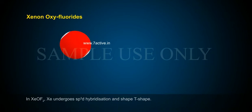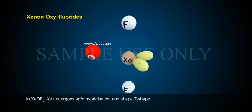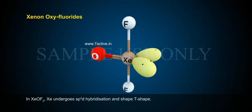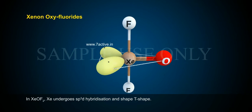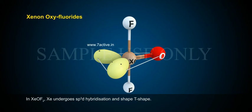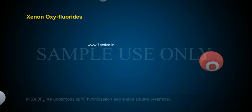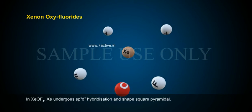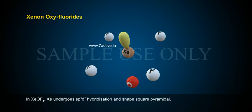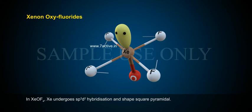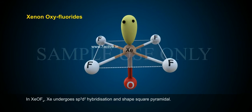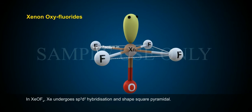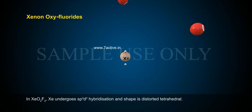In XeOF2, Xe undergoes sp3d hybridization and the shape is T-shaped. In XeOF4, Xe undergoes sp3d2 hybridization and the shape is square pyramidal.